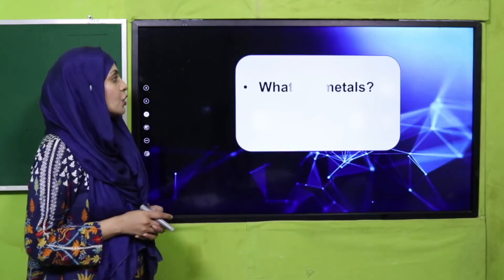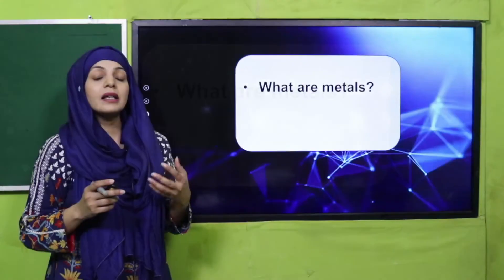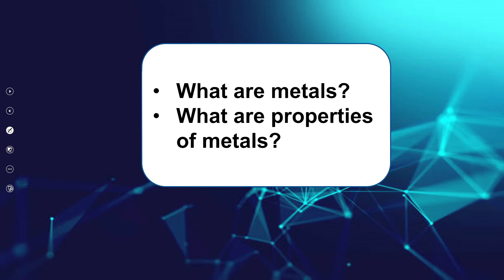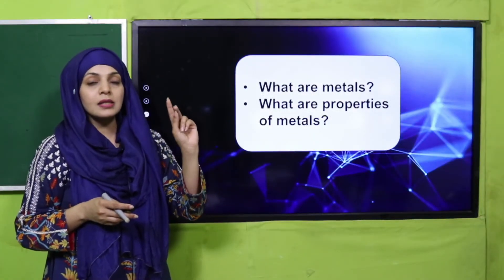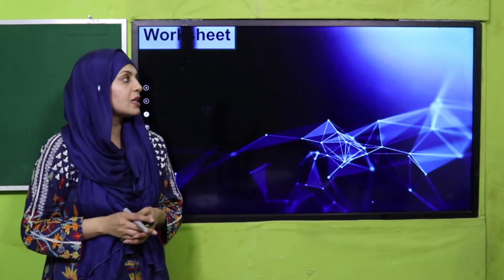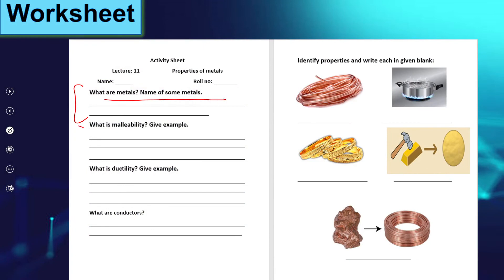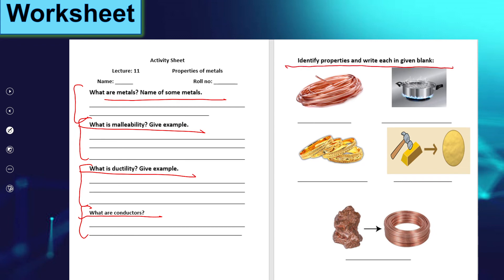Now it is time for evaluation. What are metals? Metals are the purest form of matter — they are hard and dense. What are properties of metals? They are lustrous, hard, dense, and conductors of heat and electricity. For practice, you can download the worksheet from the description box below this video, or get it in print form from your teacher. The worksheet asks: name some metals, define malleability and ductility with examples, and identify properties from pictures.